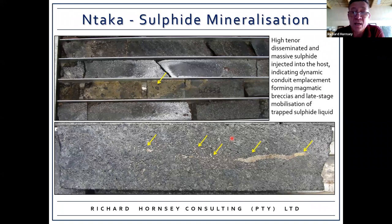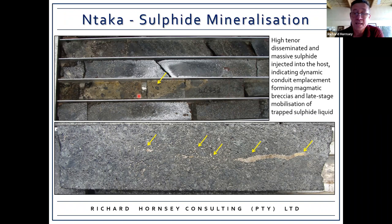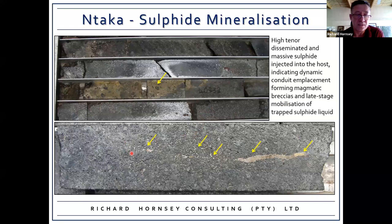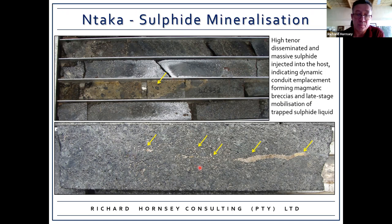The intrusion hosts high-tenor disseminated and massive sulfide mineralization at various intervals. Massive sulfide is injected into the pyroxenite hosts — at several levels as the intrusion was building up it was introducing sulfide that was then deposited. The sulfide has actually brecciated its host rock and been injected into already-lithified magma. In other instances the sulfide liquid is draining down and forming little veinlets through the cumulate pile. Amphibolitization of pyroxenite occurs as a late-stage alteration during emplacement.